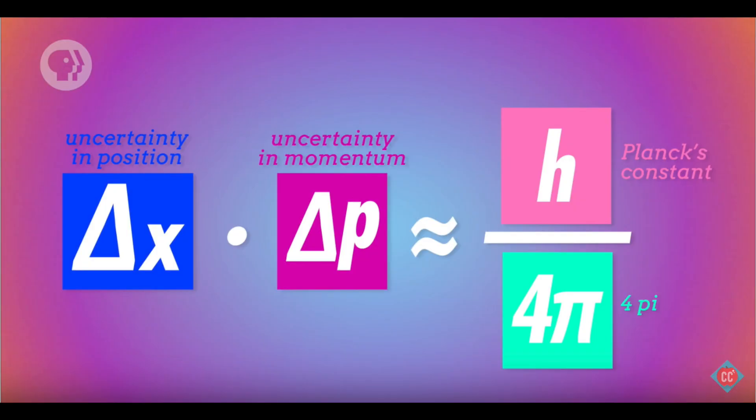Heisenberg developed an equation that states that the uncertainty in the position, which is denoted by delta x, multiplied by its uncertainty in its momentum, is greater than or equal to Planck's constant divided by 4π.